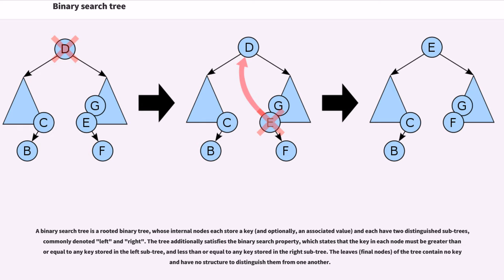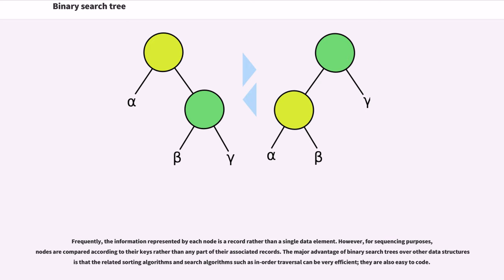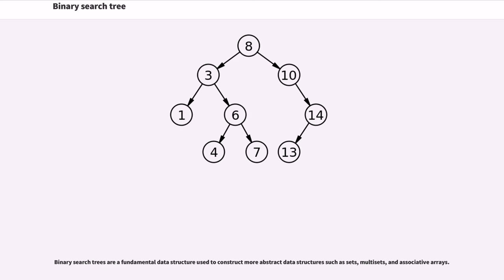Frequently the information represented by each node is a record rather than a single data element. However, for sequencing purposes, nodes are compared according to their keys rather than any part of their associated records. The major advantage of binary search trees over other data structures is that the related sorting algorithms and search algorithms such as in-order traversal can be very efficient. They are also easy to code.